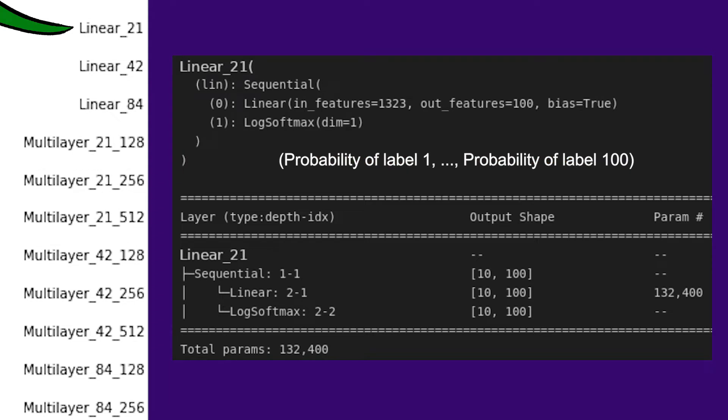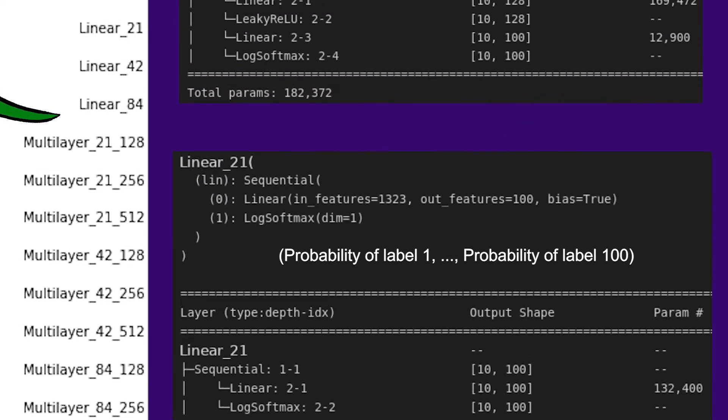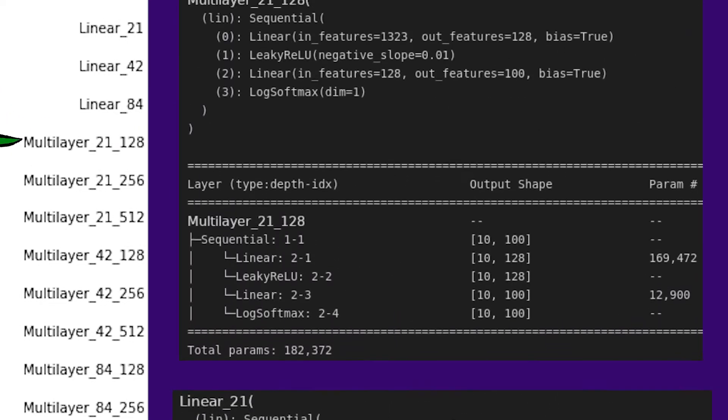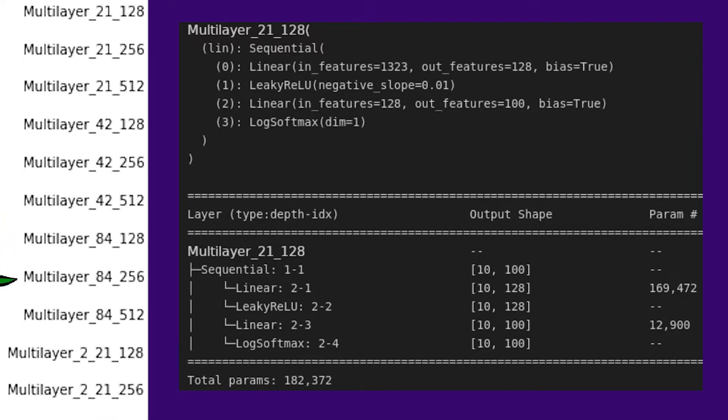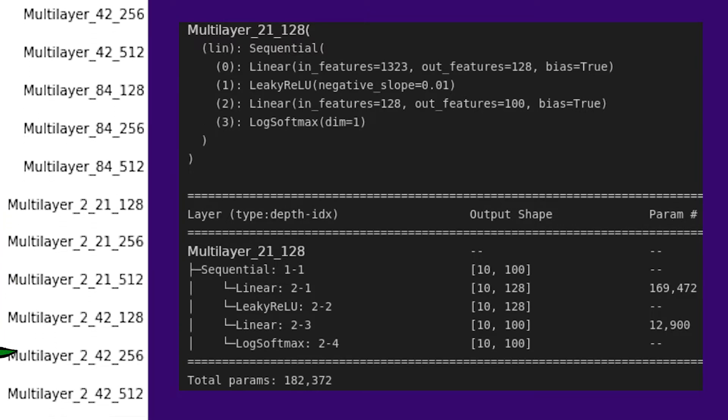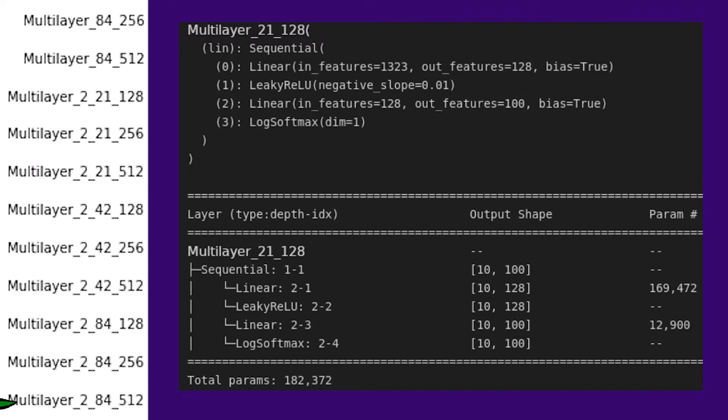More complicated models, like Linear 42 and Linear 84, resize the images to 42x42, or keep the 84x84 shape. More complicated models have a hidden layer of size 128, or 256, or 512. More complicated models have two hidden layers. That's 21 models right there.